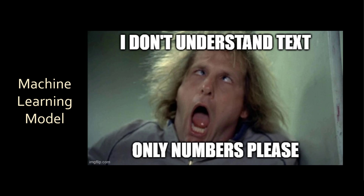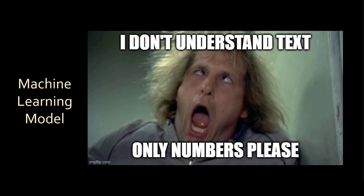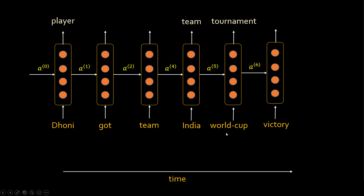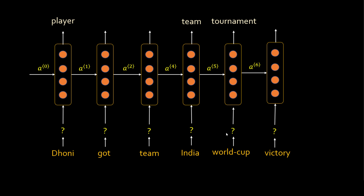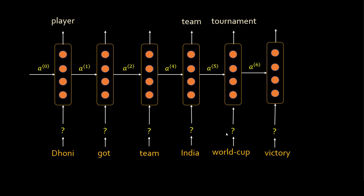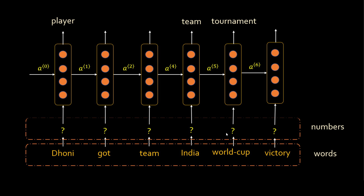But there is one big problem: the machine cannot understand text. The input is words like Dhoni, Gawad, India, whatever — the machine learning model can't understand text. We have to convert that into a number. So you need to put this extra layer as input and convert all these words to numbers.